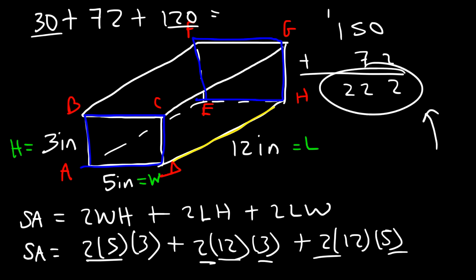So the total is going to be 222 square units. So that's the area of this rectangular prism. Now here's a separate question for you. If you wanted to calculate the diagonal length between A and G, what would it be? How would you do it?